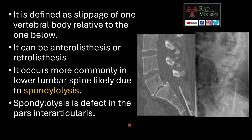It occurs more commonly in the lower lumbar spine, likely due to spondylolysis. Spondylolysis is a defect in the pars interarticularis. In this sagittal CT image we can see forward slippage of the L5 vertebral body over S1 — this is anterolisthesis. In this lateral X-ray we can see backward slippage of the L2 vertebral body over L3 — this is retrolisthesis.